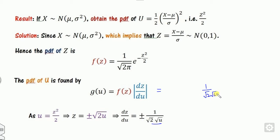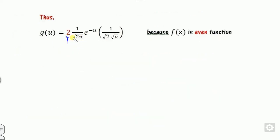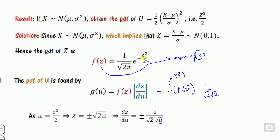Since the PDF of Z is an even function of Z (because it contains Z squared), taking plus-minus gives a factor of 2 times the PDF. Substituting, the PDF of U becomes 1 over sqrt(pi) times e to the power minus U, since Z squared over 2 equals U.